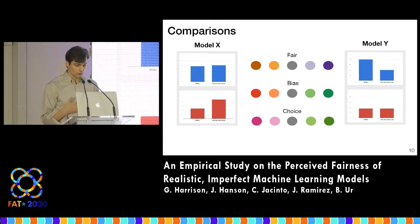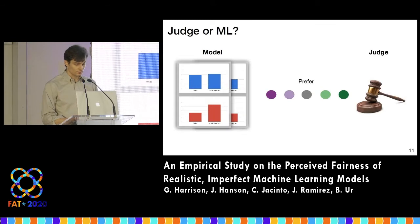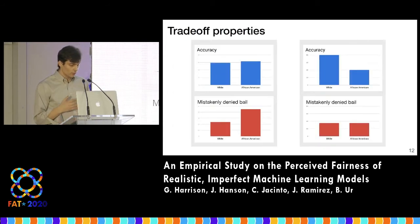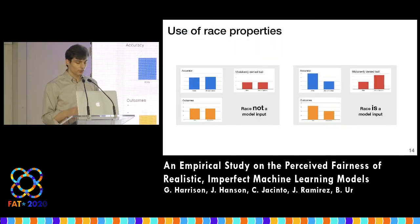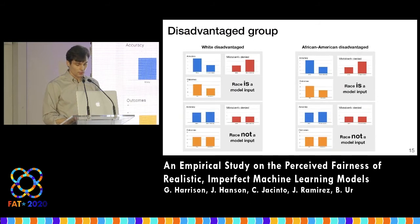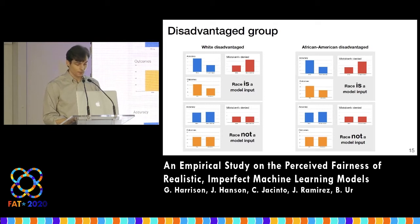Model X has equal accuracy between white and African-American defendants but disparate rates of mistaken denial of bail, and Model Y is the opposite. We also asked participants to say whether they would prefer either model or a judge. Each trade-off was a combination of two properties. We tested accuracy and false positive rate, outcomes (raw percentage of people from each group granted bail), and whether or not race was an explicit input to the model. We also varied which group was disadvantaged by the models to test whether the majority or minority status of the disadvantaged group affected judgments. This gave us 12 distinct trade-off groups and 24 models total. Our participant population was a typical MTurk sample — somewhat younger, somewhat more educated, and somewhat more male than census.